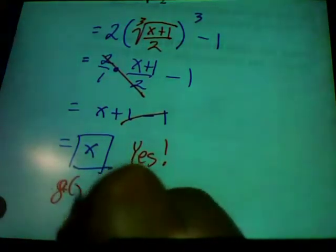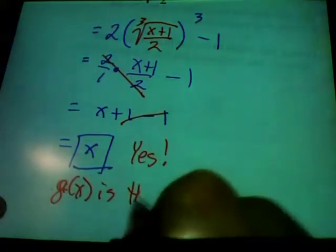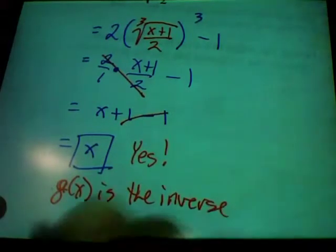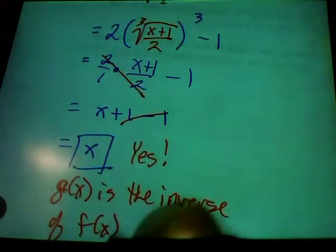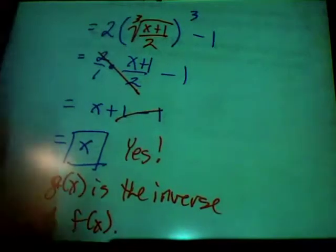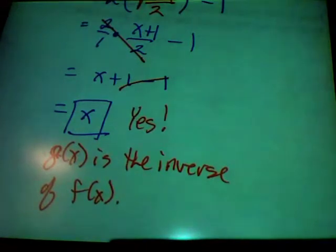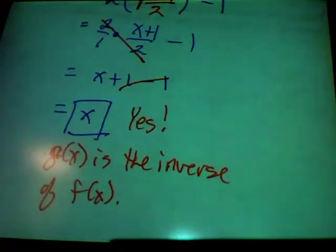Did f of the inverse of x equal x? I got x. So is g of x the inverse of f of x? Yes. So g of x is the inverse of f of x. You're specifically looking for it to come out to be x. If it came out to be anything other than x, and you did all your math correctly, then no, it's not an inverse.